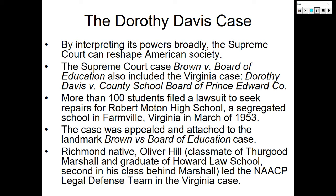The Dorothy Davis case here in Virginia was very important and connected to the Brown case. The Supreme Court case Brown v. Board of Education also included the Virginia case Dorothy Davis v. County School Board of Prince Edward County. More than 100 students filed a lawsuit to seek repairs for the Robert Mouton High School in Farmville, Virginia — a segregated school that is now a nationally historic landmark. Richmond native Oliver Hill, a classmate of Thurgood Marshall and also a Howard Law graduate who finished second in his class behind Marshall, led the NAACP legal defense team in the Virginia case.